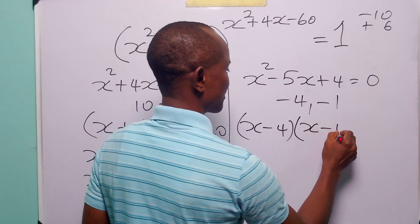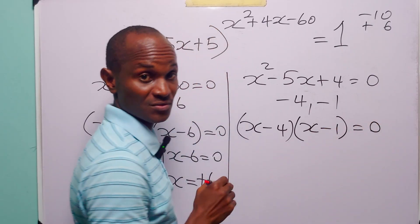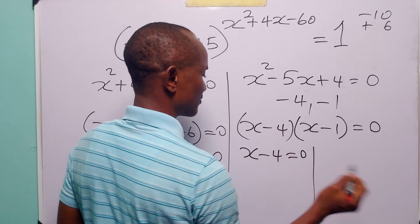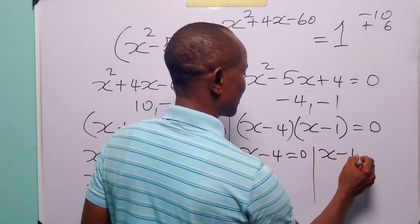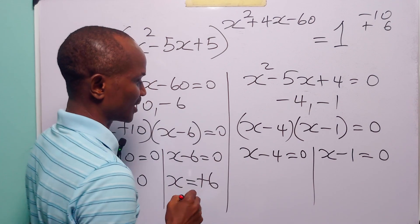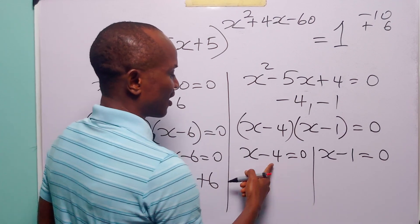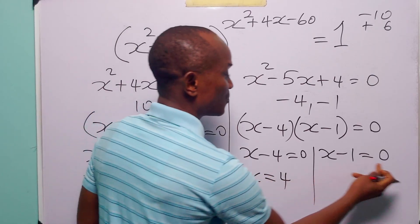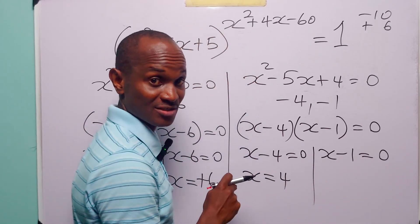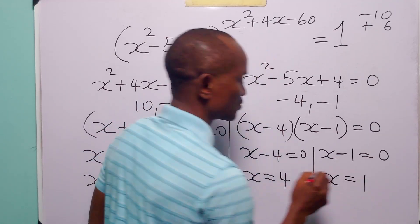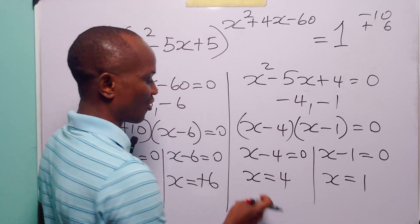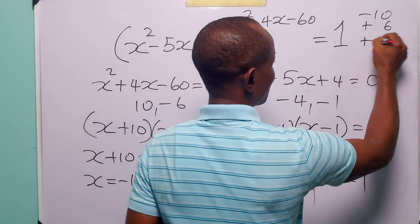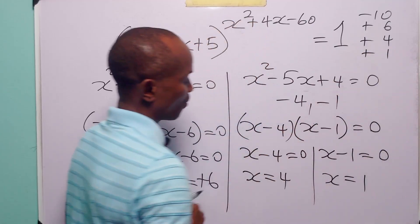So we have (x - 4)(x - 1) = 0, giving either x - 4 = 0 or x - 1 = 0. Adding 4 to both sides gives x = 4, and adding 1 gives x = 1. So we have two more values: x = 4 and x = 1.